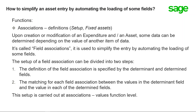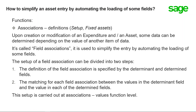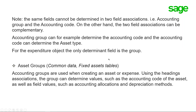The setup of a field association is divided into two steps. First, the definition of the field association is specified by the determinant and determined fields. Second, the matching for each field association between the values in the determinant field and the values in each of the determined fields. This setup is carried out at the Associations Values function level.